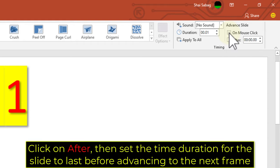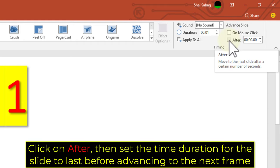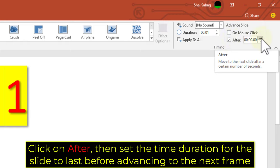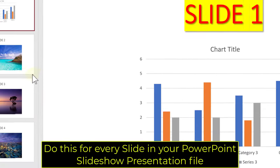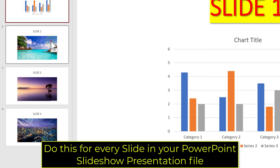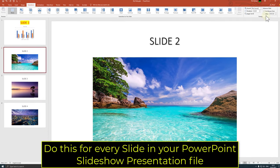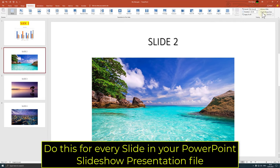Click on After, then set the time duration for the slide to last before advancing to the next frame. Do this for every slide in your PowerPoint slideshow presentation file.